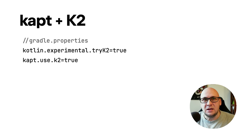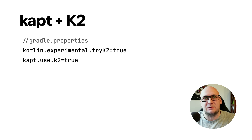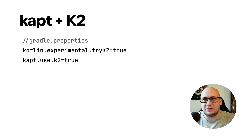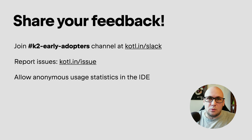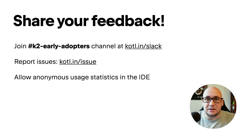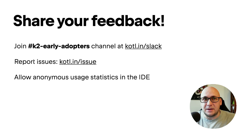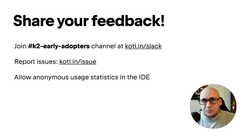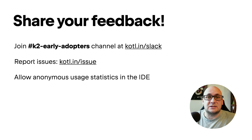In this release, we also added experimental support for the KAPT compiler plugin — we only suggest using it for evaluation purposes. To enable KAPT plugin support, add the corresponding property to the Gradle properties file. Now with K2 reaching beta status, your feedback is really important. Give it a try and share your feedback — you can join the K2 early adopters channel in Kotlin Slack, report findings to YouTrack, and share usage statistics in the IDE.